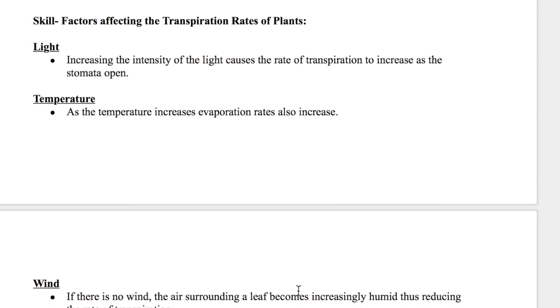Now we're going to the factors affecting the transpiration rates of plants. When there's a lot of light, the light intensity causes the rate of transpiration to increase as the stomata open. When there's a lot of sun and it's very hot outside, you sweat more. This could be an analogy to light. Temperature, again, if it's hot, evaporation also increases because water is a very good coolant.